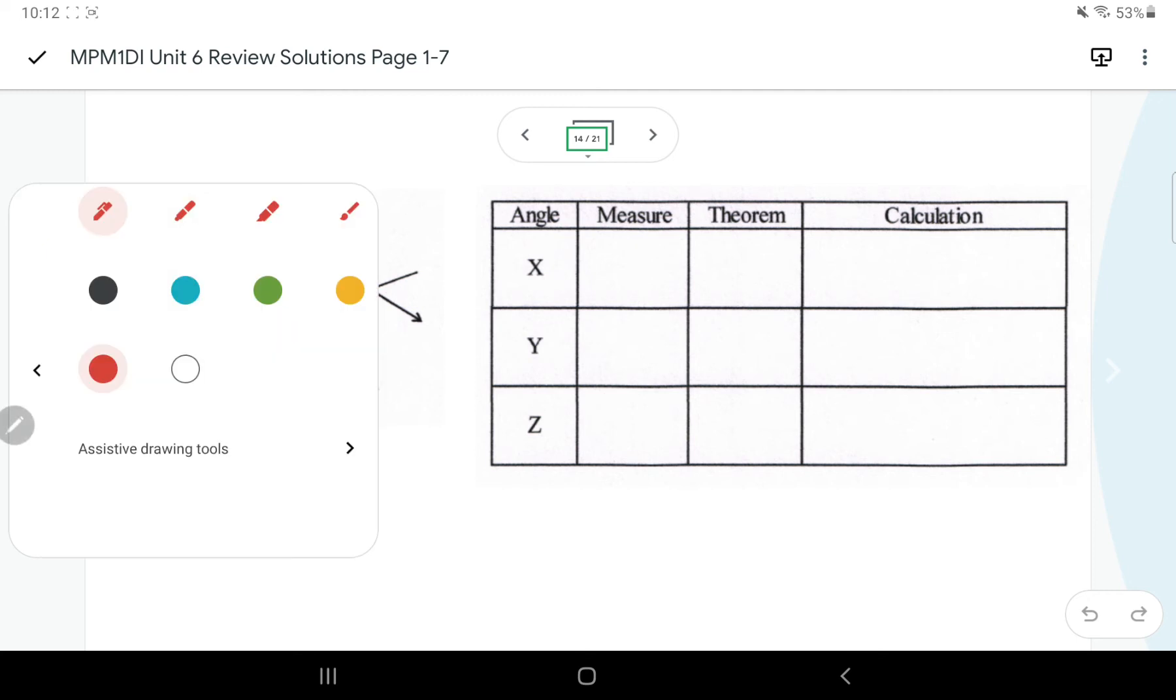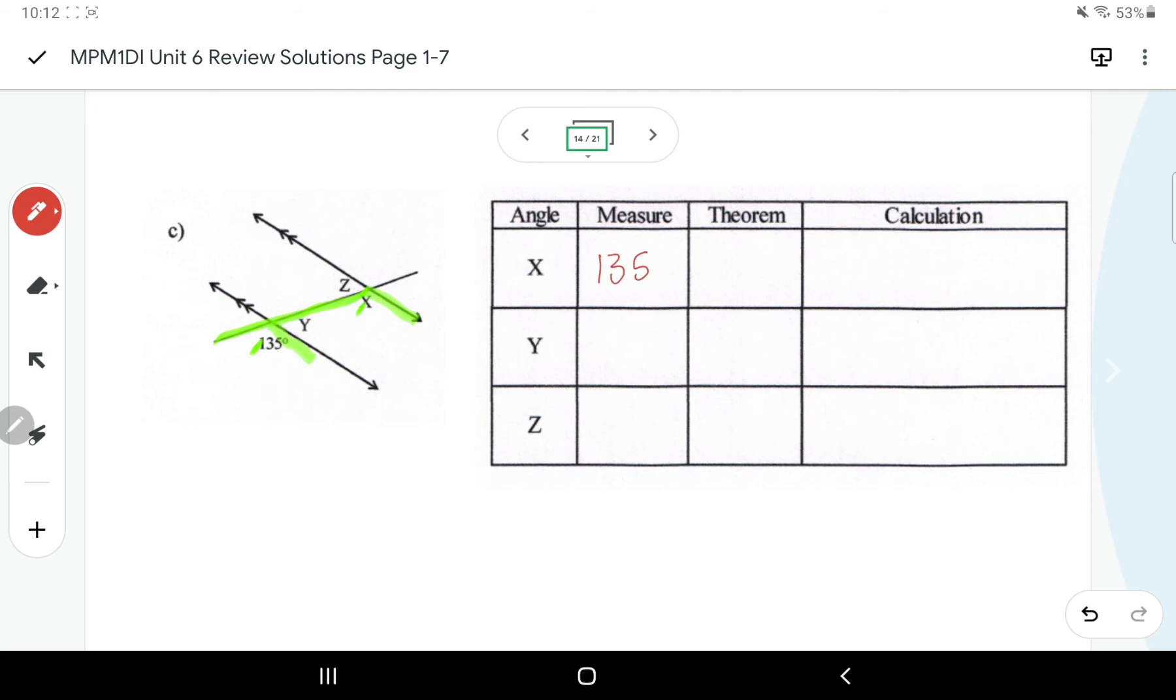So these ones we've got some angle theorems. I would start with X because I see that that makes the F pattern or the corresponding angles with that 135. So X is 135, and that's the corresponding, which is the F pattern.